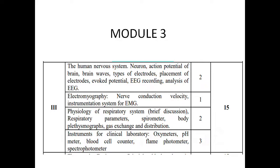This module covers the human nervous system. We will discuss brain waves, different types of brain waves, the use of electrodes, and the instrumentation system for electromyography.